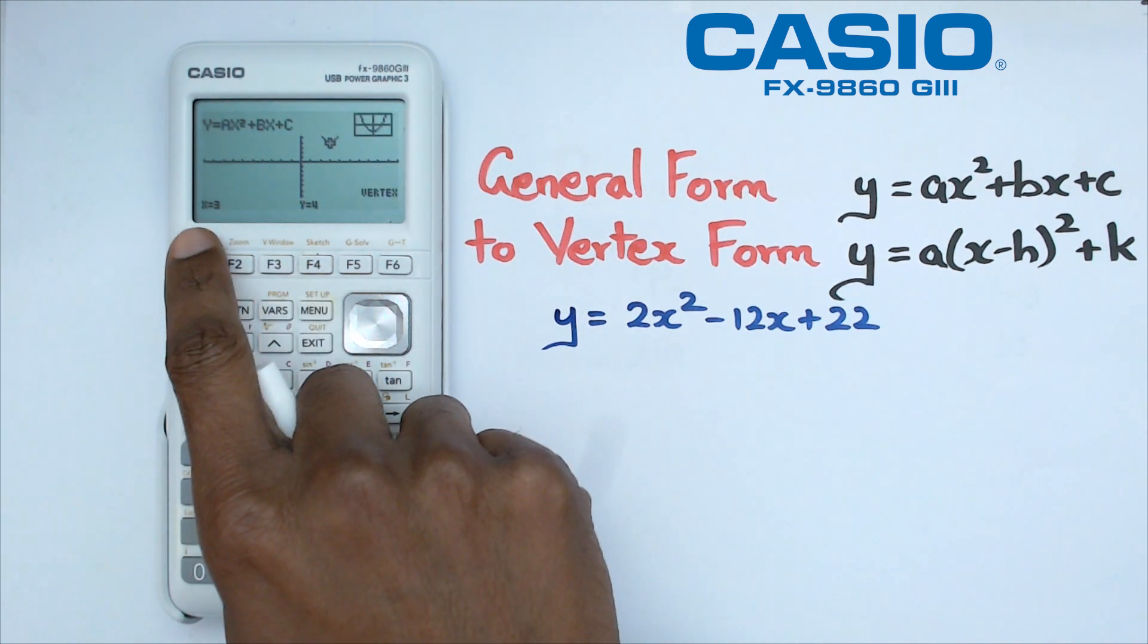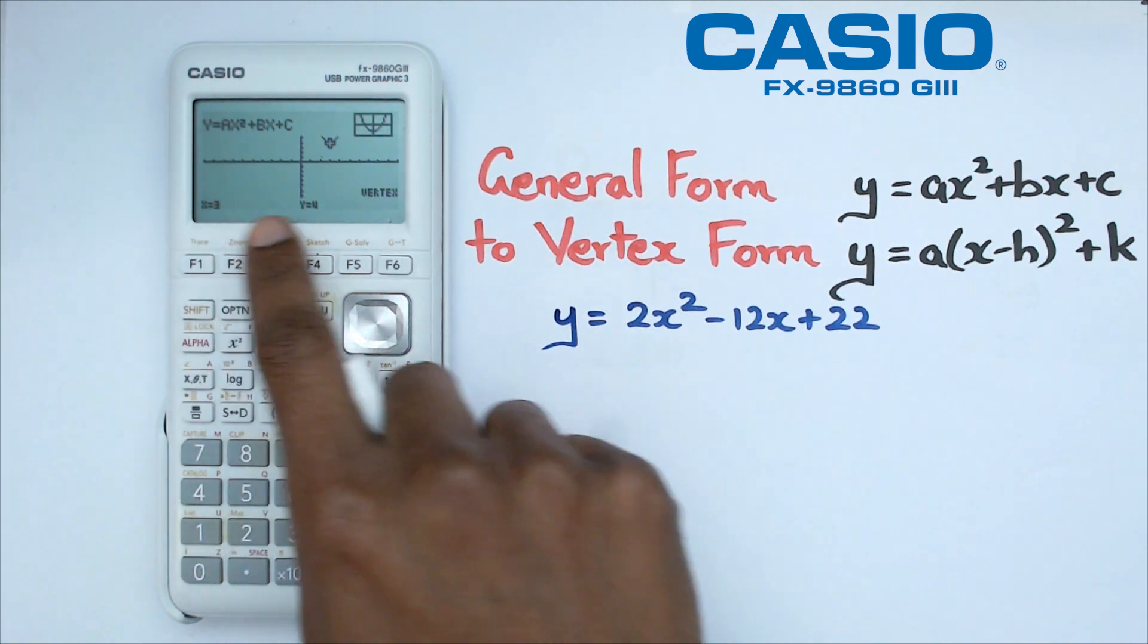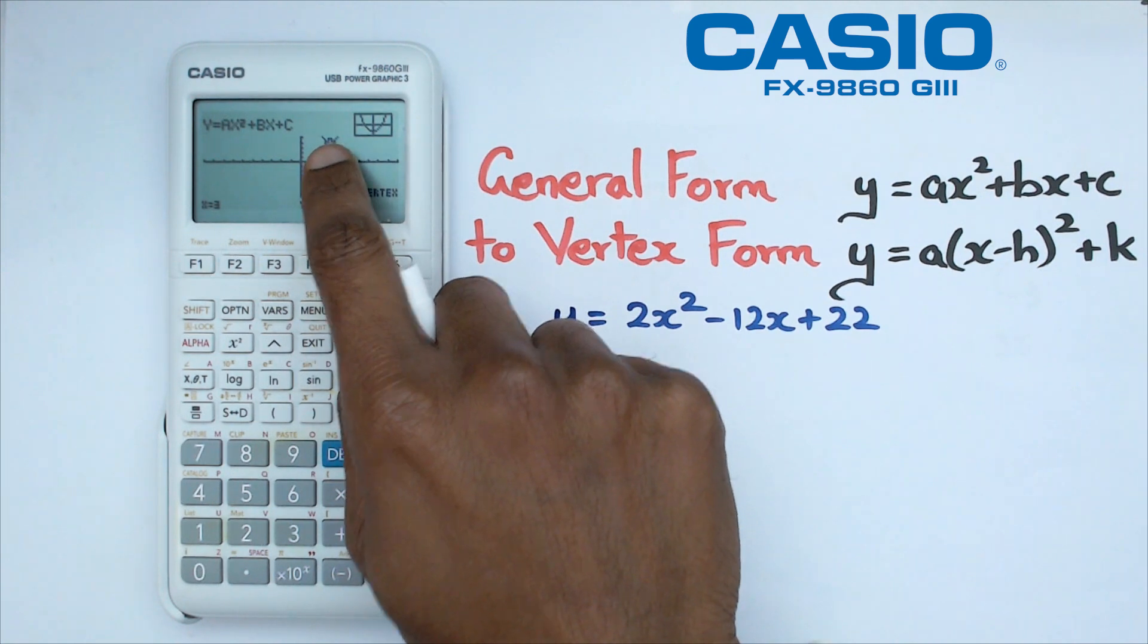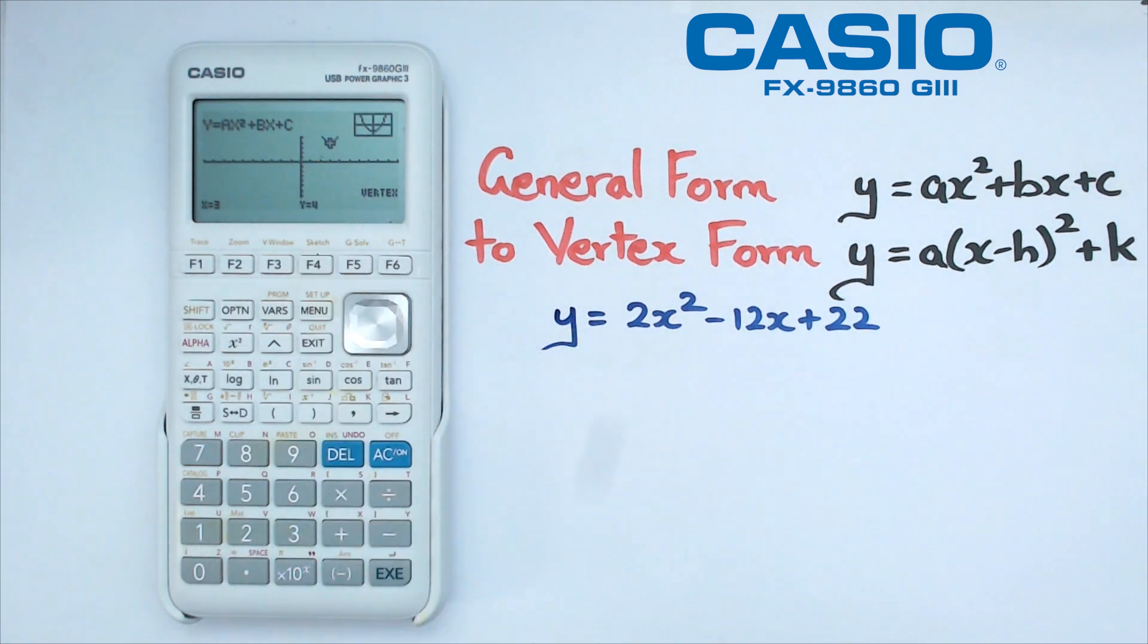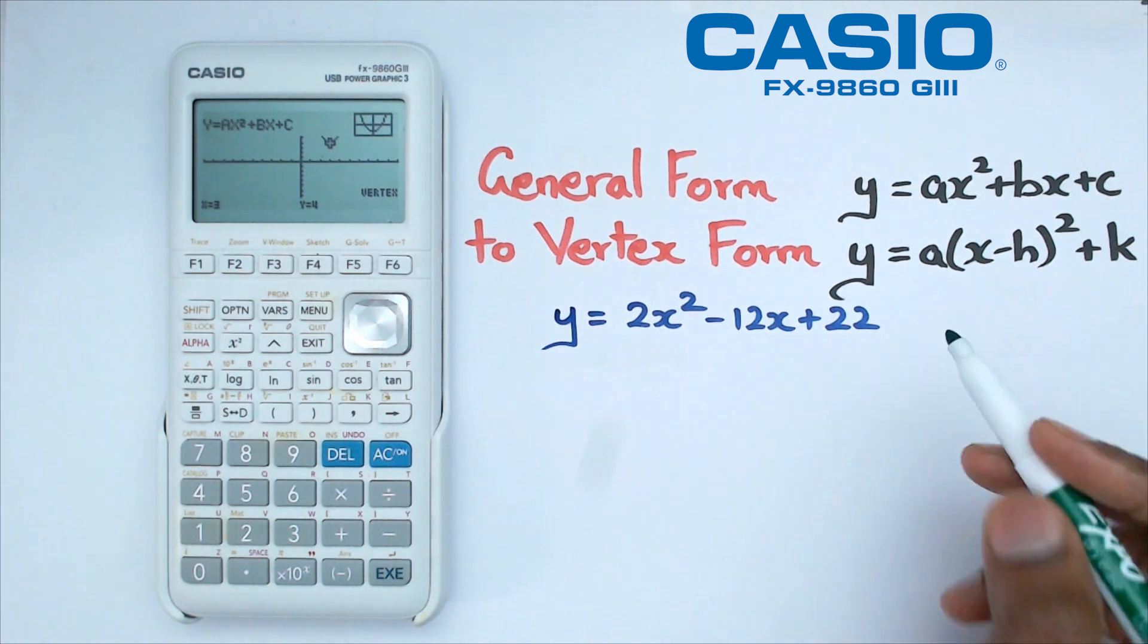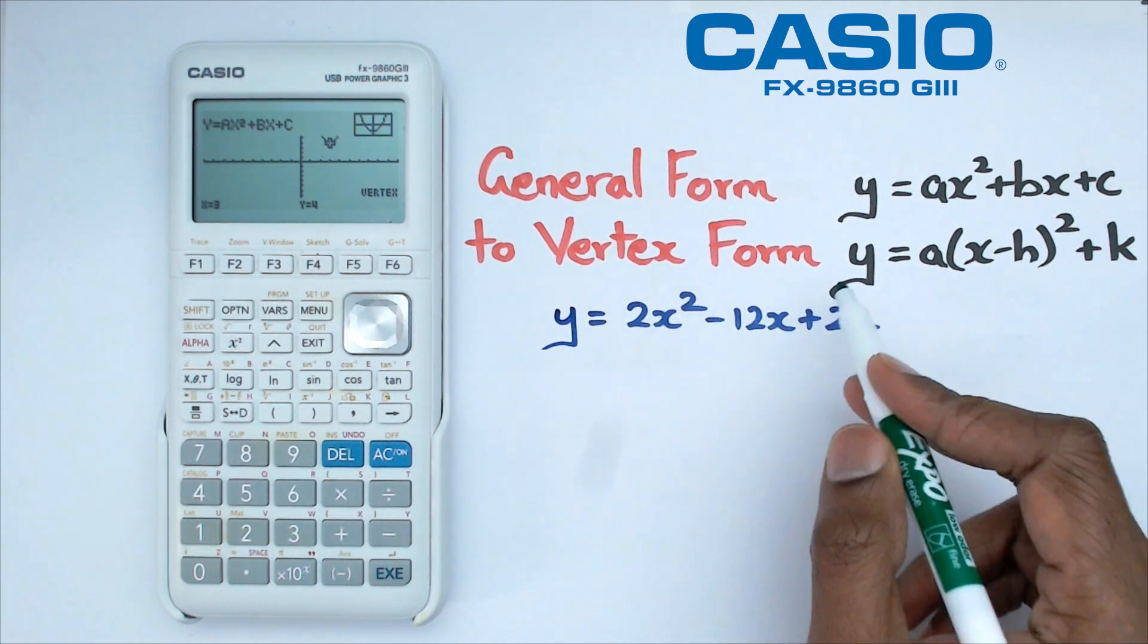And as you can see it is going to give us the vertex of 3 and 4, so this x value is 3 and the y value is 4.